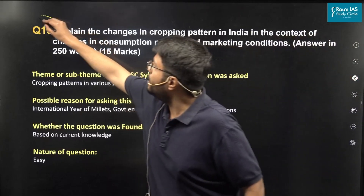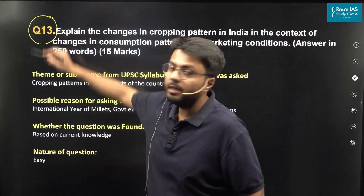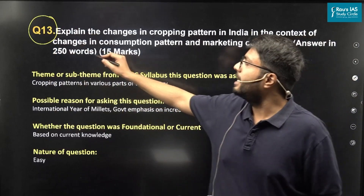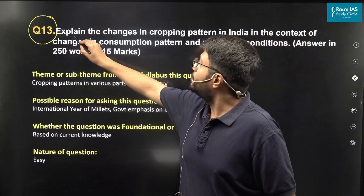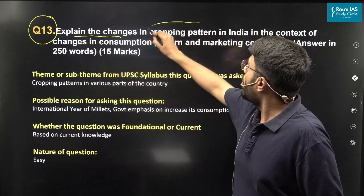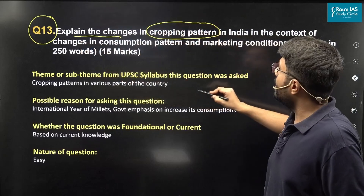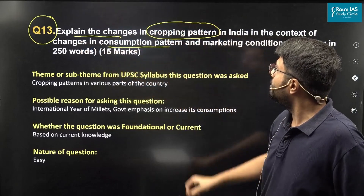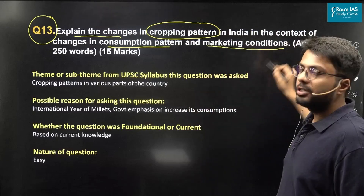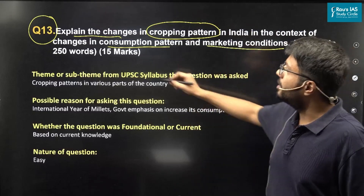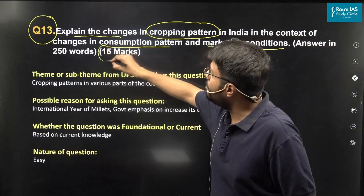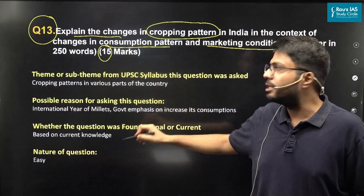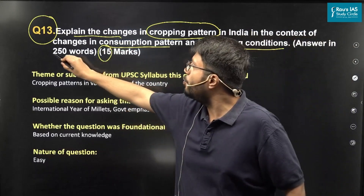Let us discuss the thirteenth question that appeared in GS Paper 3 this year. This question states: 'Explain the changes in cropping pattern in India in context of changes in consumption pattern and marketing conditions.' This is a 15-marker question, so you have to answer it in 250 words.